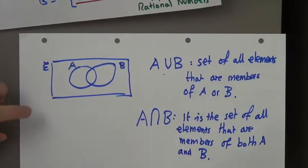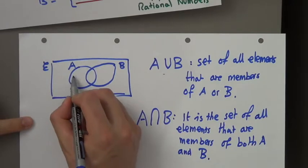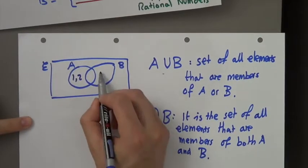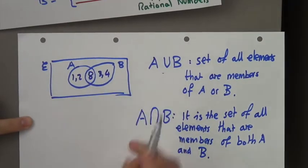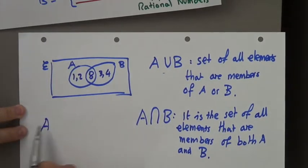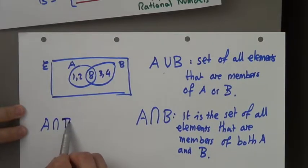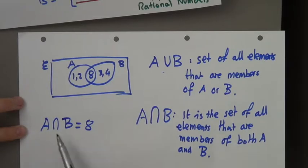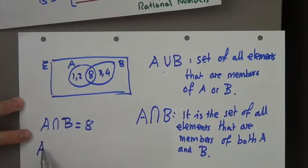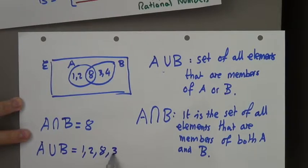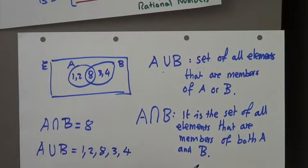So, let's do an example. Let me just show you. So, if I put 1, 2, 3, 4, and maybe an 8 here. A intersection B will be 8, because 8 is a member of both A and B. If I did A union B, it would be 1, 2, 8, 3, and 4.